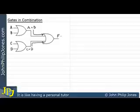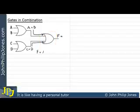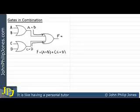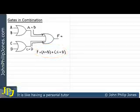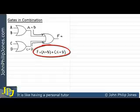Now at F we can say F equals — I'll write it down here — the inputs to this particular OR gate all ORed together. So the first input is A or B, and I'll put brackets around that so we can easily distinguish it as one of the inputs. We're going to OR that with the other input, which is C or D, also in brackets. So what we have there is the boolean expression at F, representing the functionality of these OR gates in combination.